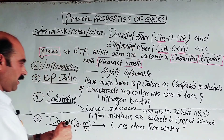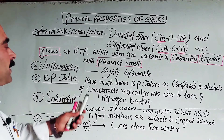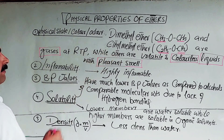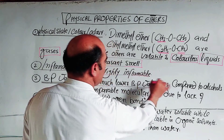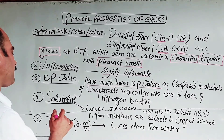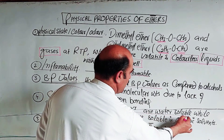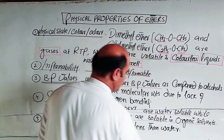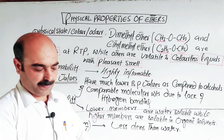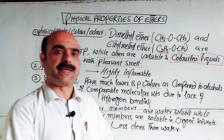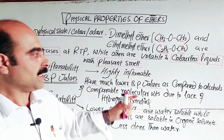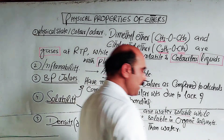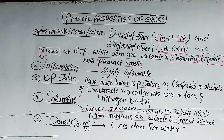So these were all about the physical properties of ethers. To summarize: physical state — lower members are gases, higher members are volatile colorless liquids with pleasant smell. Inflammability — highly inflammable. Boiling point values — lower than alcohols of comparable molecular masses. Solubility — lower members are water-soluble, higher members are soluble in organic solvents. Density — less dense than water.